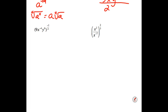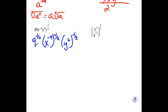I'm going to pause the recording — try the last two. Distributing the negative 1 half exponent to all pieces: a negative 1 half power for the 9 changes it to a 3 and flips it to the denominator, so it becomes 1 third. For the x's, negative 4 times negative 1 half gives x squared in the numerator. For the y's, 6 times negative 1 half is negative 3, so y cubed flips to the denominator.